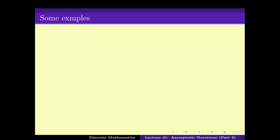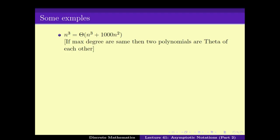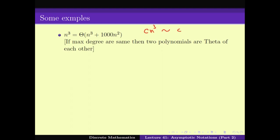Here are some examples to solve and prove for yourself. First: n cubed is Theta of n cubed plus 1000n squared. In fact, when you have two polynomials and their maximum degree is the same, then they are Theta of each other. If the coefficient of the maximum degree term is also the same, then we have asymptotic similarity. So c times n cubed is tilde of c times n cubed plus d times n squared plus lower order terms. When looking at polynomials, the maximum degree is what matters.